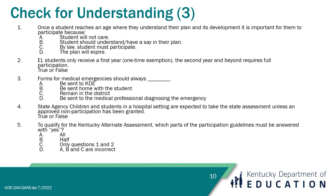Now moving along to our check for understanding. Question 1: Once a student reaches an age where they understand their plan and its development, it is important for them to participate because — A. The student will not care. B. The student should understand and have a say in their plan. C. By law, students must participate. Or D. The plan will expire. The answer is B: a student should understand and have a say in their plan.